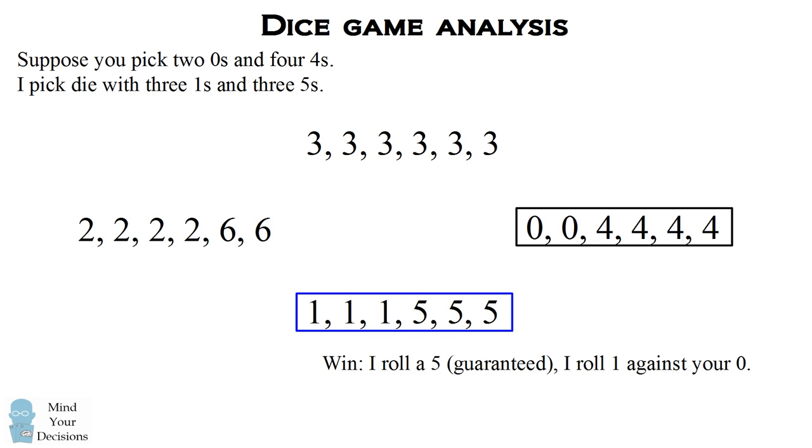Now, I'm going to win if I roll a five, because any time I roll a five, it's higher than you rolling a zero or a four. So in three out of the six cases, I'm going to roll a five, and I'm guaranteed to win. Now, when I roll a one in three out of the six cases, I'm only going to beat you in the two out of the six cases that you roll a zero as well.